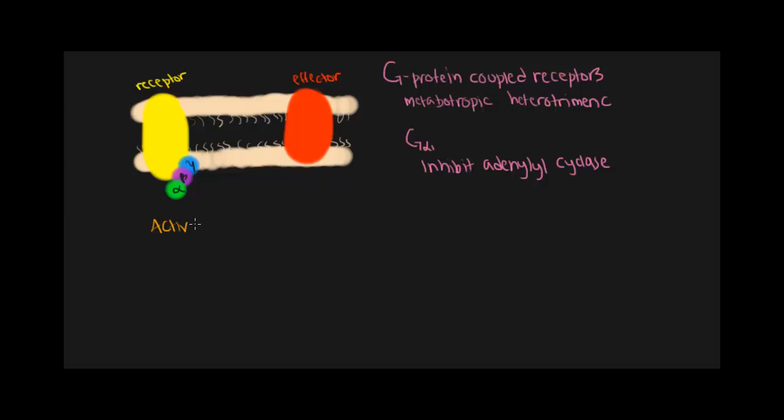Activation of the G alpha I mechanism results in inhibition of adenyl cyclase. In this diagram, adenyl cyclase is this red protein here. Adenyl cyclase is a transmembrane protein.